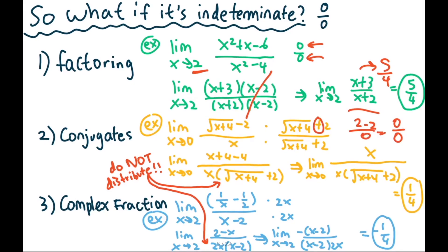Now let's look at the next question: limit as x approaches zero of (√(x + 4) − 2) / x. In this case, we can first tell it's an indeterminate question because if you plug in zero you get two minus two divided by zero — that's zero over zero. In this case, we will apply what is called a conjugate — you multiply by its conjugate on top and bottom: (√(x + 4) + 2). The opposite sign — that is what a conjugate is.